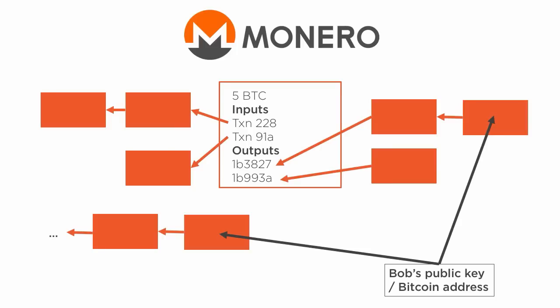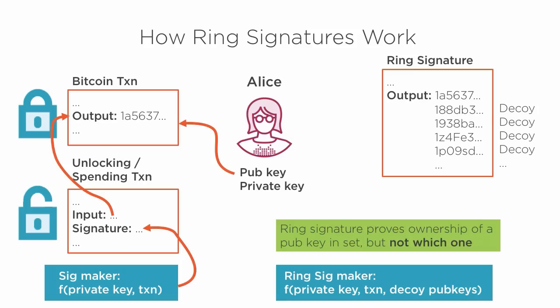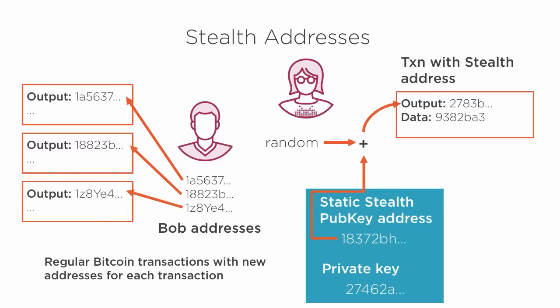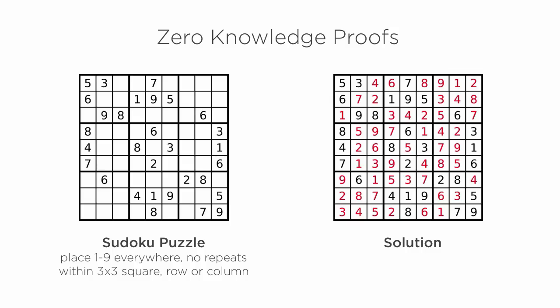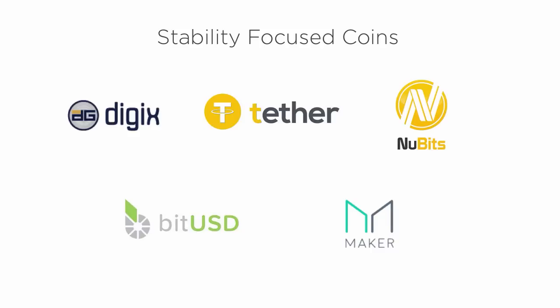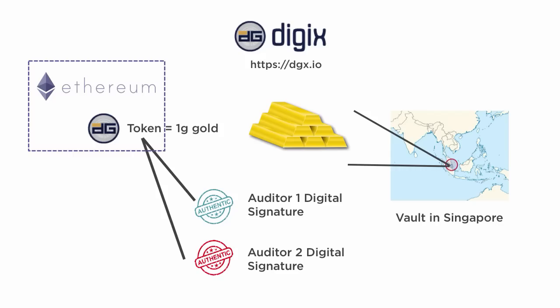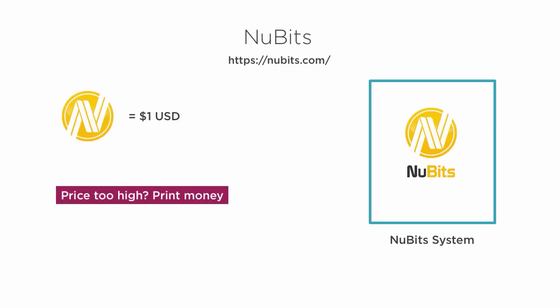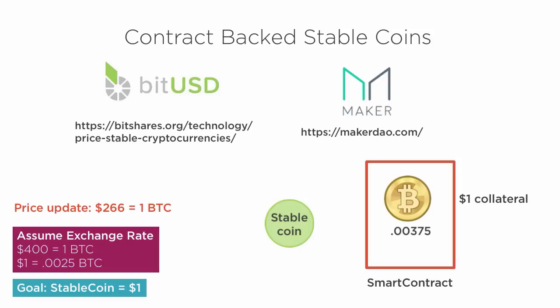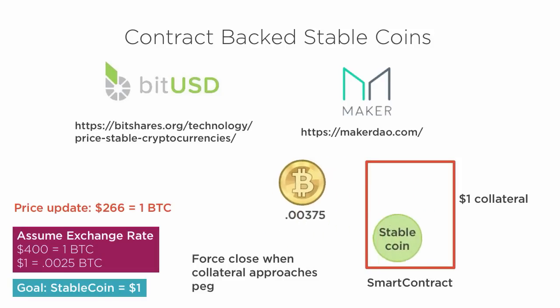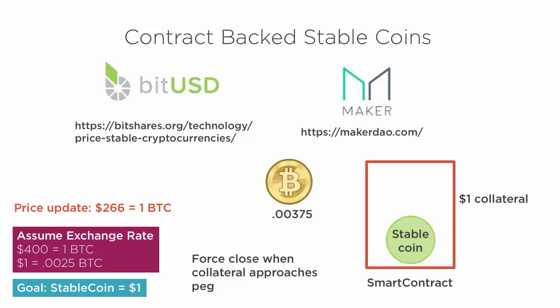Moving on, the course discusses new systems that aim to improve privacy, including Monero, ring signatures, stealth addresses, and zero-knowledge proofs with ZeroCash. Stability-focused coins are covered next, including Digix, Tether, BitUSD, and MakerDAO. These systems hope to offer the benefits of digital currency — that is, easy and low-cost transfer, programmability, etc. — with the stability of the US dollar.